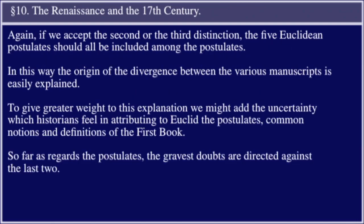Again, if we accept the second or third distinction, the five Euclidean postulates should all be included among the postulates. In this way, the origin of the divergence between the various manuscripts is easily explained.